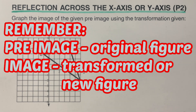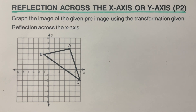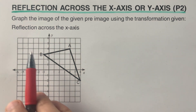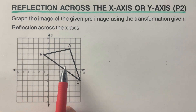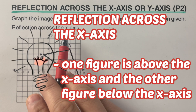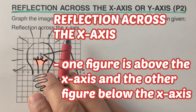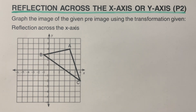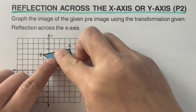Let's have the first example: graph the image of the given pre-image using the transformation given. We are supposed to perform a reflection across the x-axis. When we say reflection across the x-axis, one figure is above the x-axis and the other figure is below the x-axis — we are reflecting it up and down. In this problem, we are given this pre-image, which is the original picture, and we are supposed to flip it.